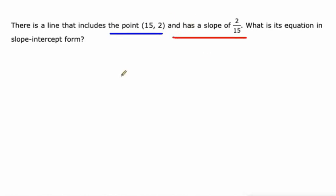So let's start off with our equation, our slope-intercept form, y equals mx plus b.